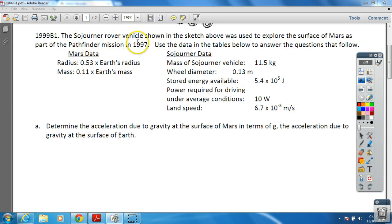It says that the Sojourner rover vehicle, shown in the sketch that you'll see up top there, went to Mars on a mission in 1997. They want us to use all the data that you see here to answer the question.